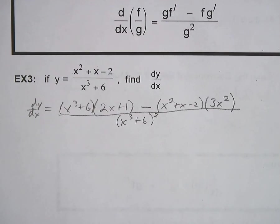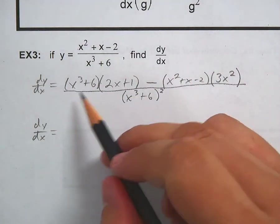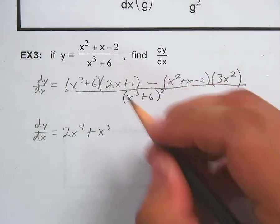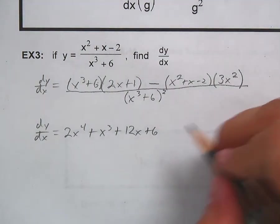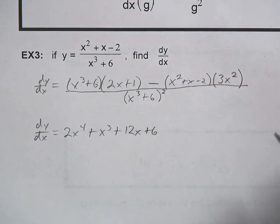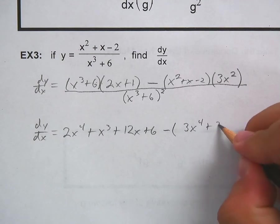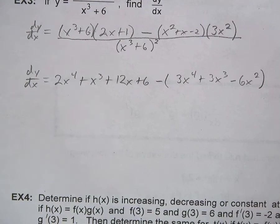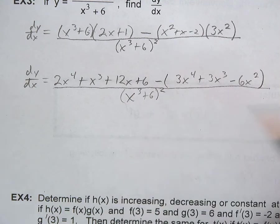Don't freak out — this isn't as complicated as it looks. Expanding the numerator: (x³ + 6)(2x + 1) = 2x⁴ + x³ + 12x + 6. Then for the subtracted part, multiply first to get 3x⁴ + 3x³ − 6x², and be very careful — the minus sign distributes to every term. So subtract that entire expression. The result is all over (x³ + 6)².